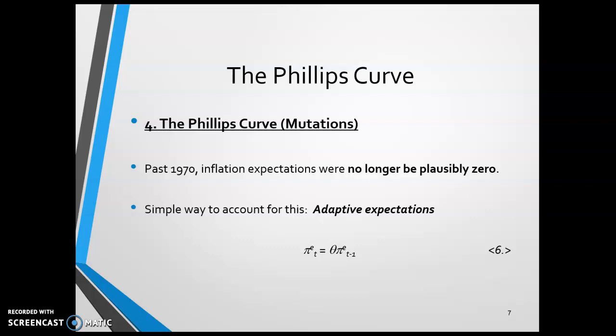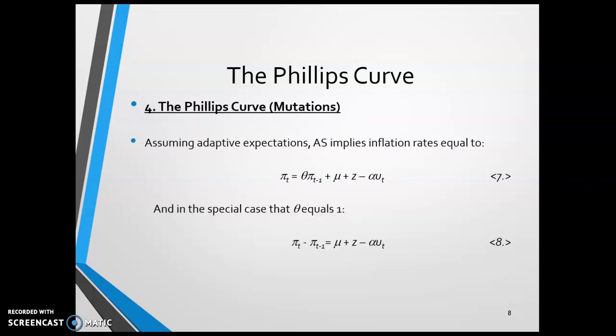Assuming adaptive expectations, our dynamic aggregate supply curve then changes a little bit. Inflation in this case is equal to some function of last year's inflation plus μ + z minus α times u_t. Still a negative function of unemployment, but it is also a function of what inflation was, because we think what inflation was yesterday is going to affect inflation today.